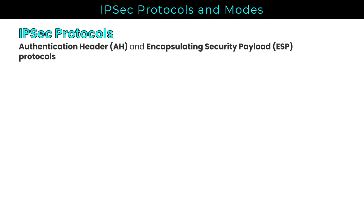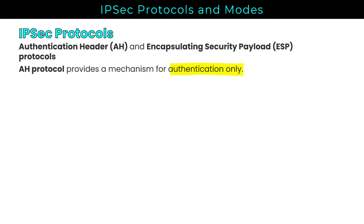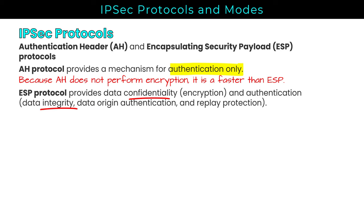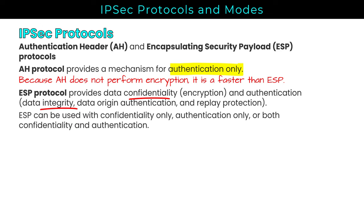IPsec protocols and modes are important to be familiar with. In IPsec, we have Authentication Header and Encapsulating Security Payload, commonly abbreviated as AH and ESP. AH provides a mechanism for authentication only, and because Authentication Header doesn't perform encryption, it's going to be faster than Encapsulating Security Payload. ESP provides confidentiality, encryption, and data integrity, and it can be used with confidentiality only, authentication only, or both of those together, so it is configurable in that respect.